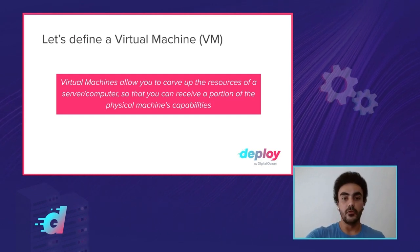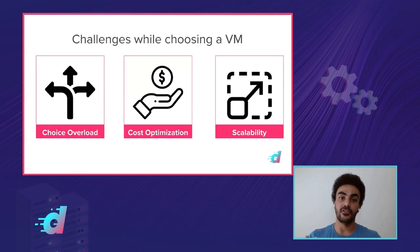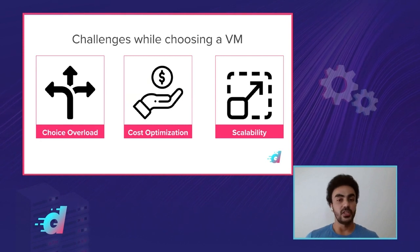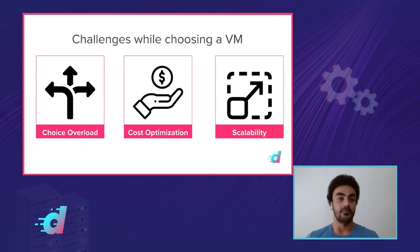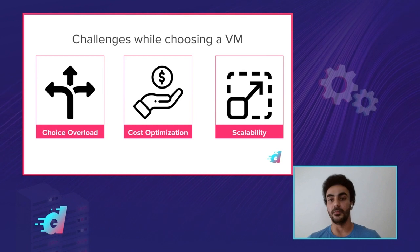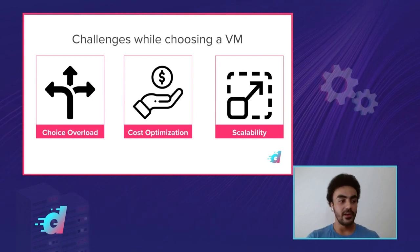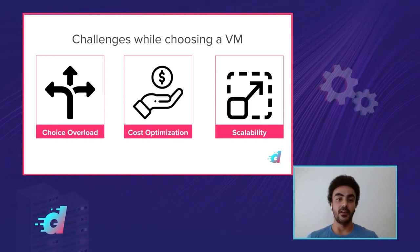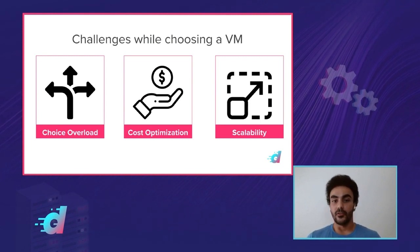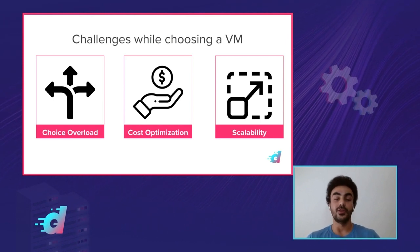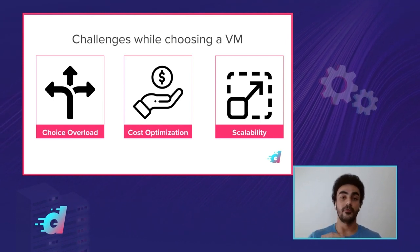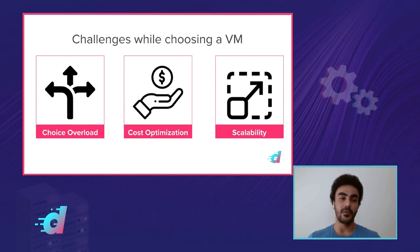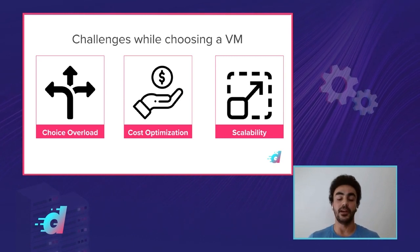Let's move into the kind of challenges you'll encounter when picking a VM. First is just choice. Any provider you go to, you will see tens if not hundreds of choices of VMs, and you'll come across all different hardware terminology you'll have to understand yourself. Then after you figure out which one you need, you'll have to figure out how to optimize your costs, because you can find the perfect VM but it can be really expensive. We'll talk about how to keep costs to a minimum while still optimizing for performance.